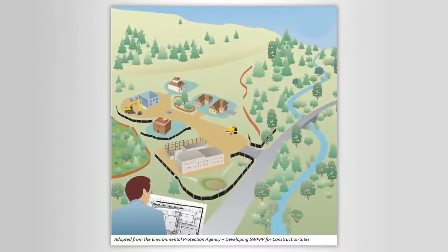There are four main hotspots in a construction site where erosion should be carefully managed. The main location is within the areas of earthwork activities. Every location where construction disturbs existing plants, soil and rocks is a hotspot location for erosion.